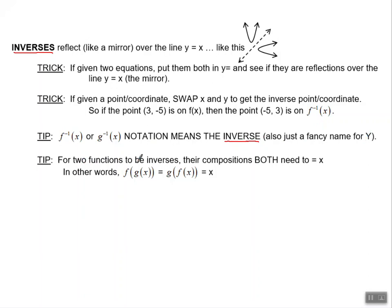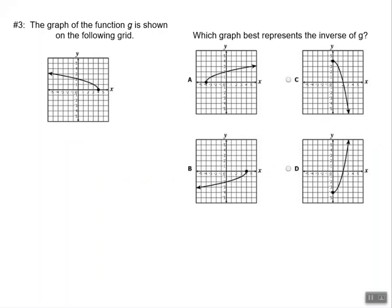And another tip, if we have two functions and we want to see if they are inverses, their compositions need to both be equal to x. In other words, if we were looking for f of g of x or g of f of x, both of those compositions, if they are inverses, will have to equal x. And that's why y equals x is our mirror.